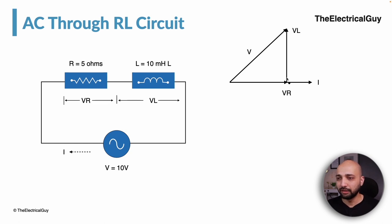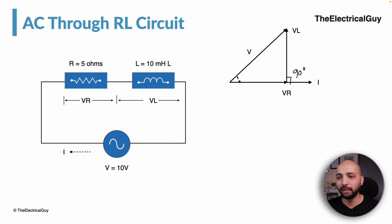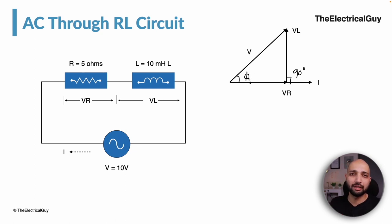The angle between the voltage drop across the inductor and the current is 90 degrees. The angle phi is the angle between the total circuit current and the applied voltage, and this is what we need to identify from the phasor diagram.